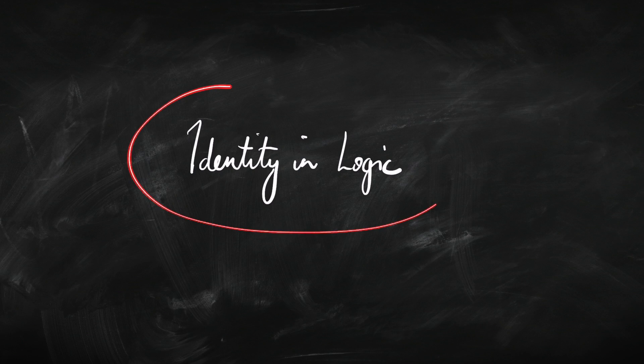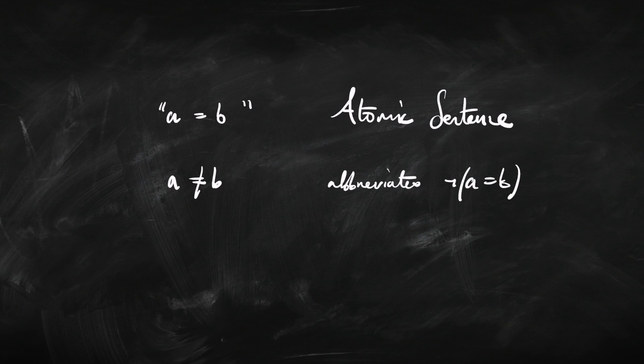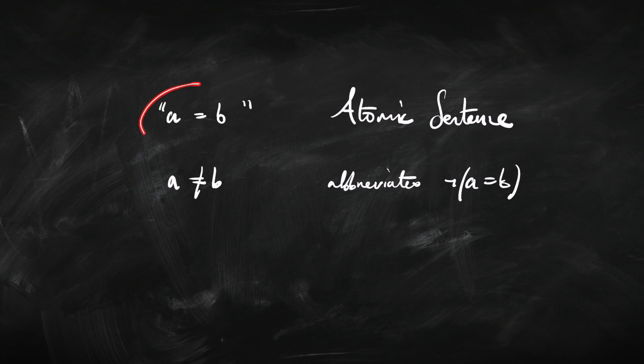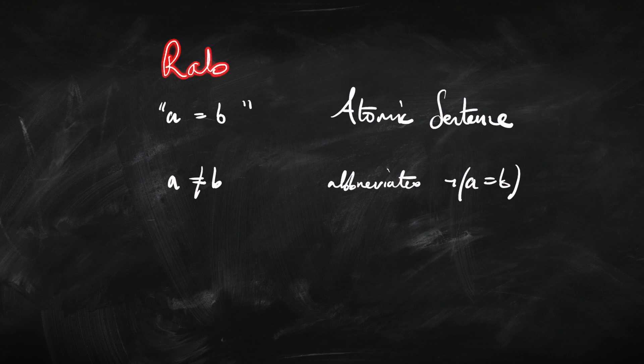There are lots of deep philosophical questions we can ask about identity. For the time being, we're going to ignore most of those and focus on identity as it crops up in first-order logic. We have to think about how we add identity to our language — that's actually really simple. We're going to add this predicate, writing identity in between two names, rather than before names as we would with being happy or being married to. We could also write it between names and variables, or two variables. These are all well-formed atomic sentences — they have no connectives.